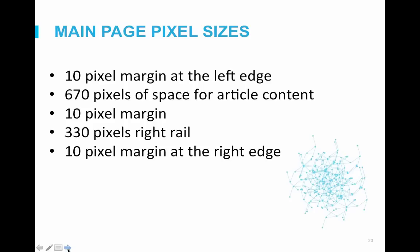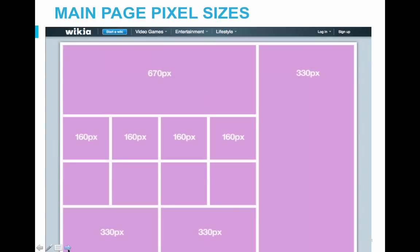Wikia uses a grid layout which appears in different arrangements on different pages, but has a standard pixel width you can design around. The standard sizes are: a 10-pixel margin at the left edge, 670 pixels of space for article content, another 10-pixel margin, 330 pixels in the right rail, and a 10-pixel margin at the right edge. Here you can see a visual representation of the grid layout. The most important one to remember for the main page is the main column for article space, which is 670 pixels.